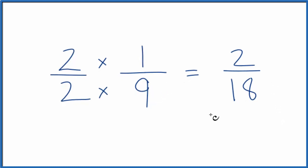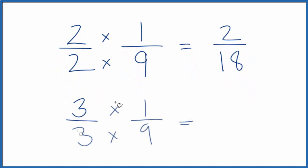Let's try another one. How about three over three? Three times one is three. Three times nine is 27. This is another fraction equivalent to one-ninth or two-eighteenths. And again, three divided by three is one. We're just multiplying by one.